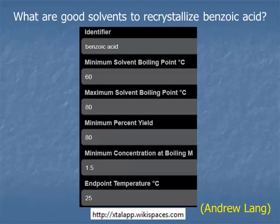The identifier is flexible — you can use a common name, a SMILES, or a ChemSpider ID. It defaults to minimum boiling point of 60 and maximum boiling point of 80, but that can be changed to 100 or anything you want. Obviously you want a low boiling solvent so your solid dries as easily as possible. The minimum percent yield defaults to 80, but if you're not getting any hits you can lower that.